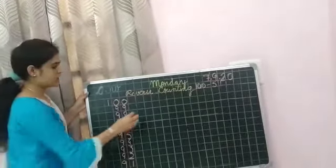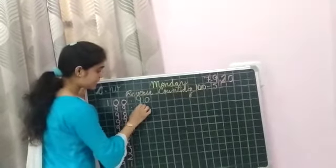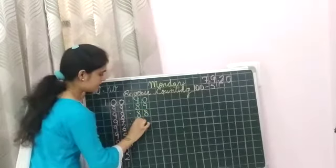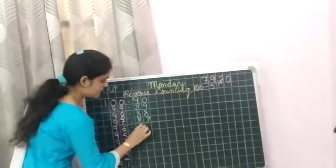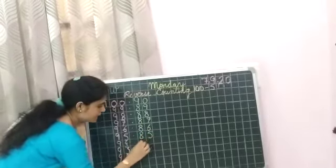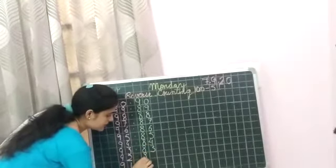Okay? Now, leave one line here. Now, next line. What comes before ninety-one? Yes, we will write ninety here. Now, what comes before ninety? Yes, eighty-nine. Then, eighty-eight. Then, eighty-seven. Eighty-six. Eighty-five. Eighty-four. Eighty-three. Eighty-two. And, eighty-one.